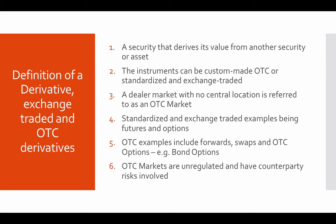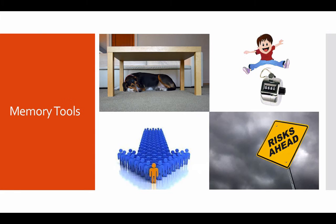Now you might be thinking there are a lot of things here which don't seem really clear at this point in time. But the key points we need to keep in mind are covered through certain visual aids in the next slide. On the top left corner you're seeing a dog lying underneath the table.